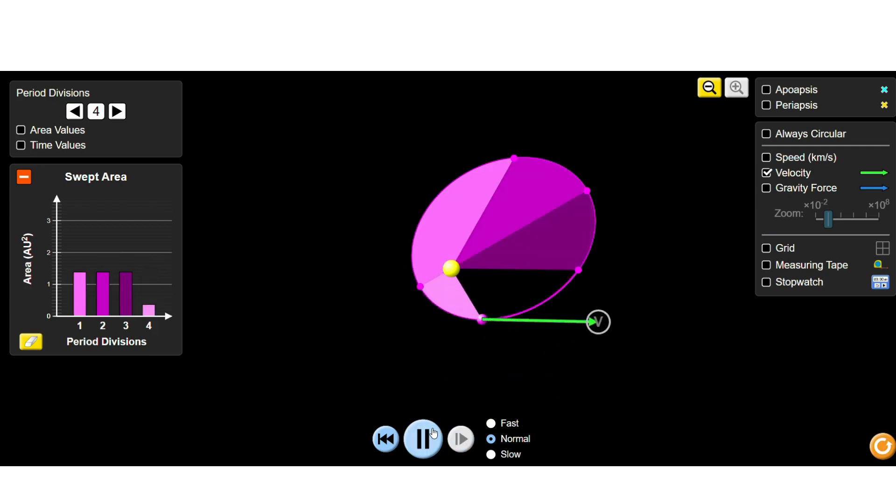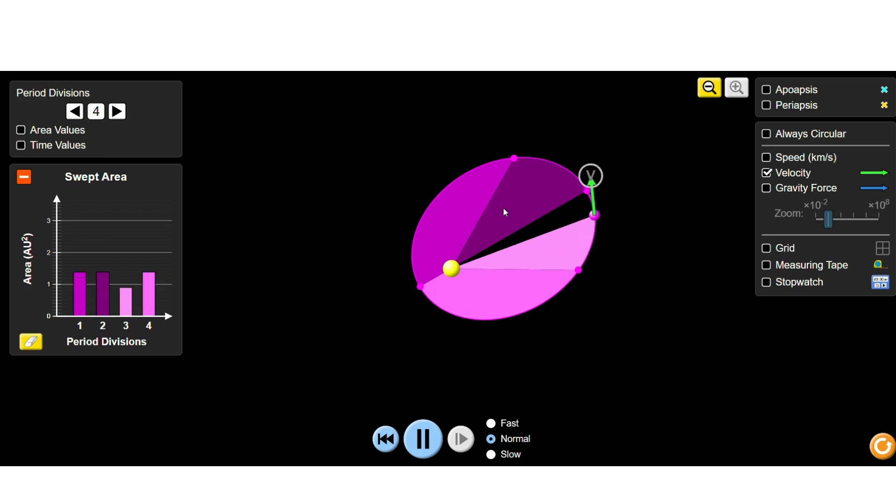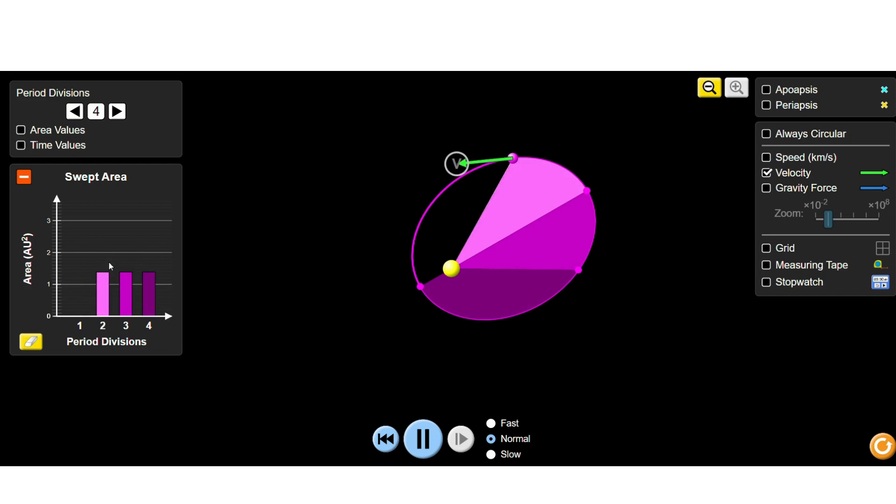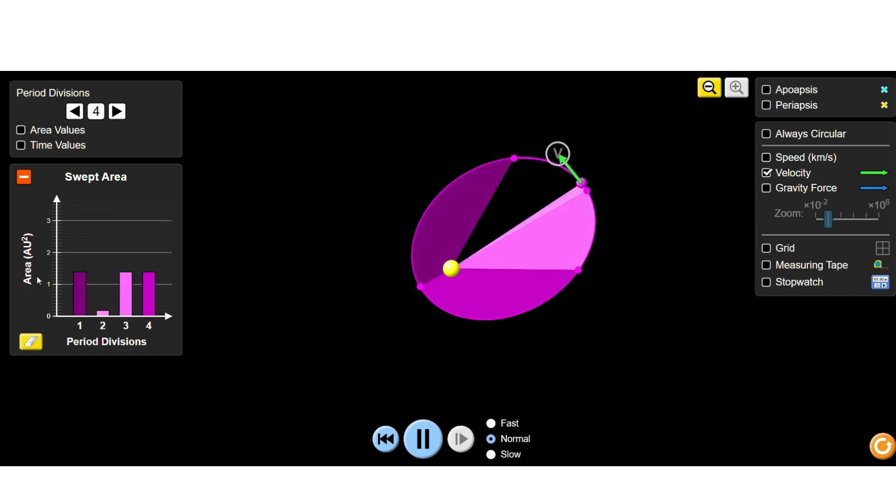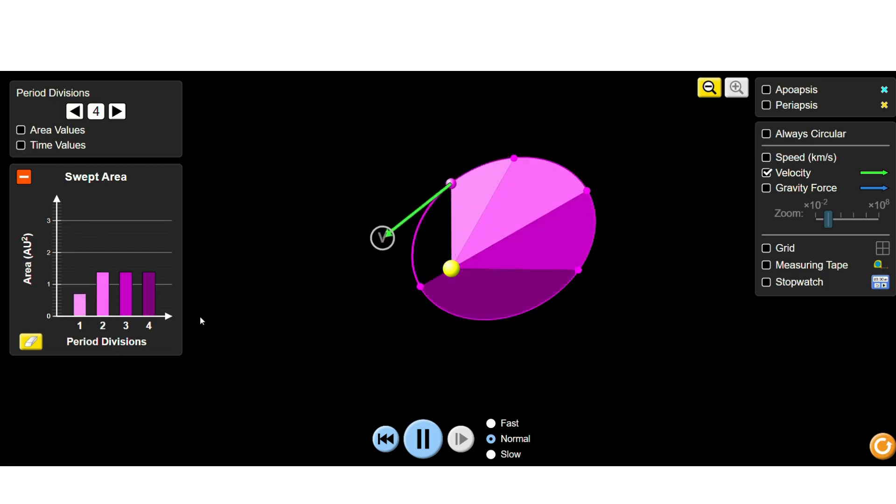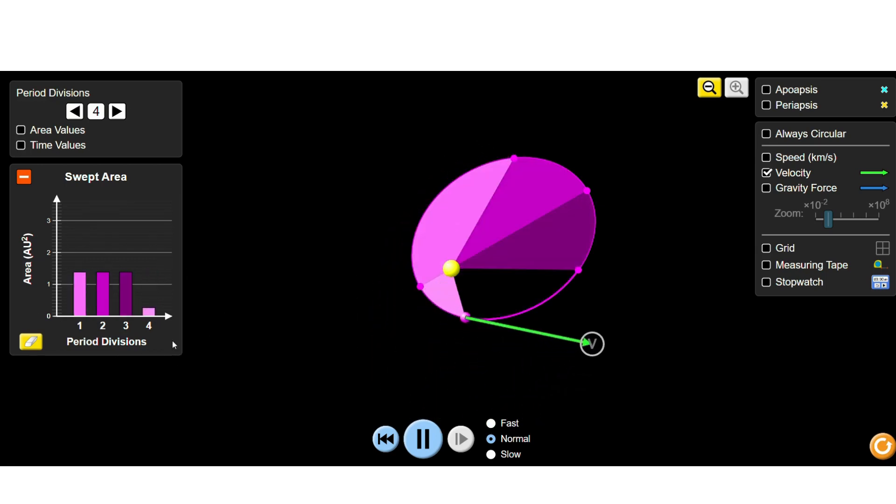You can observe that the planet sweeps around the star covering equal areas in equal time. This graph shows area versus period of division, demonstrating that the planet travels around the star in equal areas in equal time.